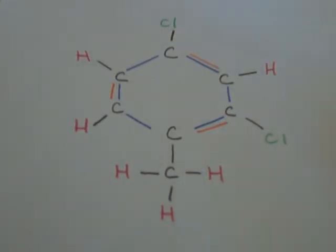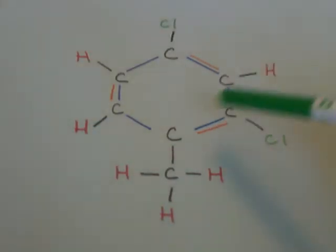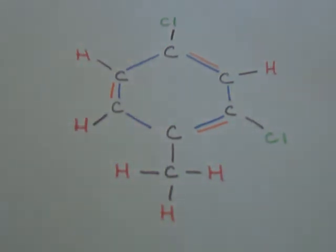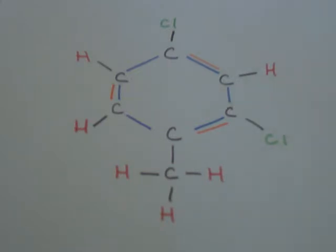First, what we want to do always is start counting from the least number. We would start counting, and the halogens have preference. Take those two into account. Since this is a benzene, just by the shape of it, it's a benzene. We can pretty much start anywhere, but the halogens take preference, so we're going to start at a halogen group.